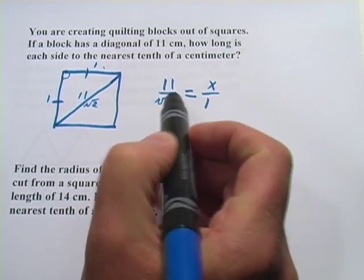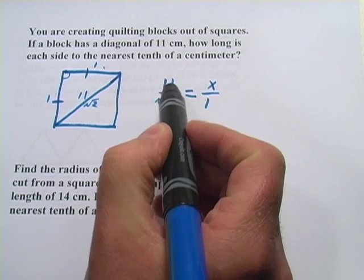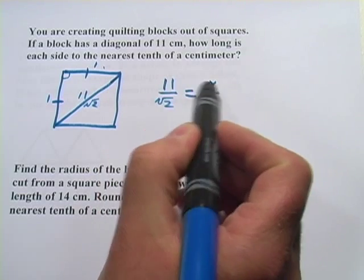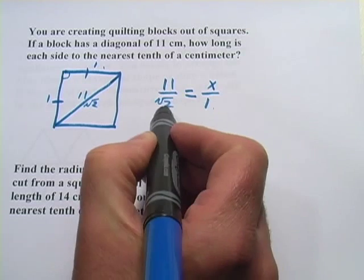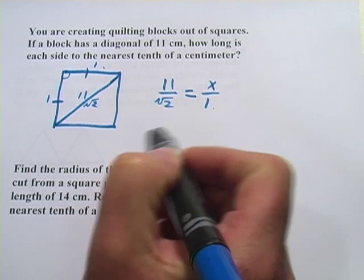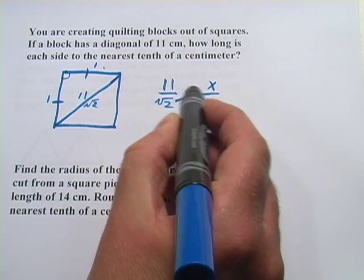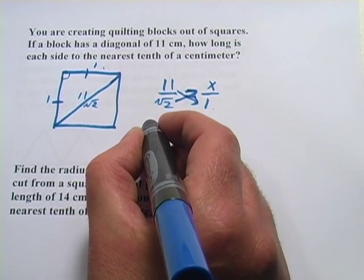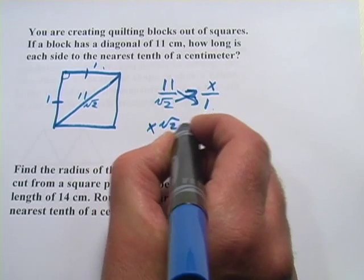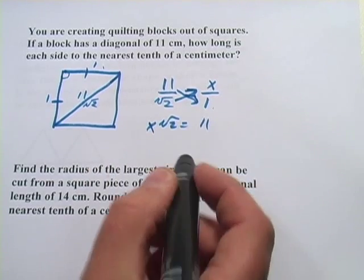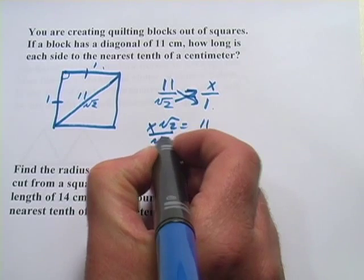So notice I set up a proportion with two ratios and on the top I've got the real lengths of the sides. And on the bottom I've got the ratio lengths that were given for a standard 45-45-90 triangle. Now I can cross multiply and I get x times the square root of 2 equals 11.